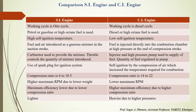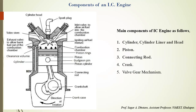Now let's look at the block diagram of the CI engine. The important main components of the CI engine are: cylinder, cylinder liner, cylinder head, piston, connecting rod, crankshaft, and valve/gear mechanism. These parts are shown in the figure and we have to design each of these parts — from basic selection through to final dimensions.